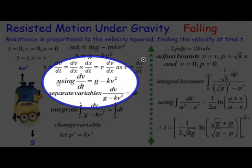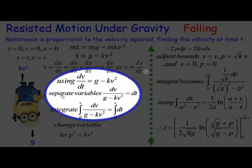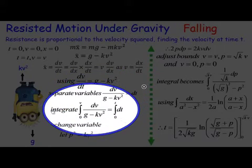So the first one we use is dv/dt equals g minus kV squared. Now we separate the variables, get the v's with the v's and the t by itself, dt. Then we integrate from zero to v as time goes from zero to t.